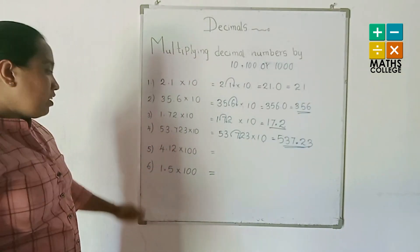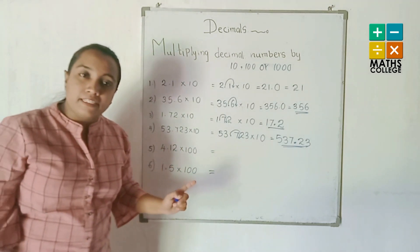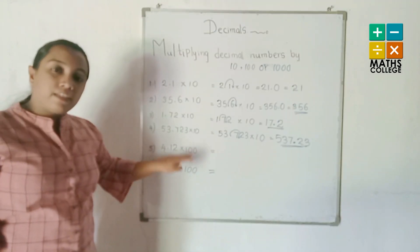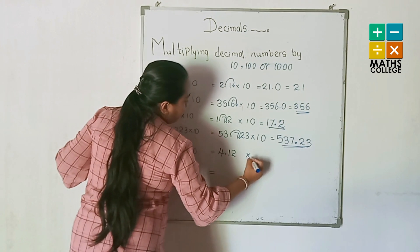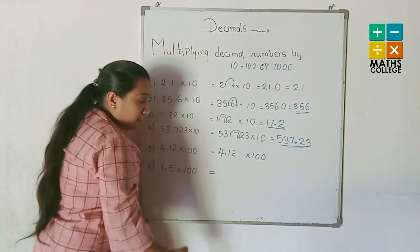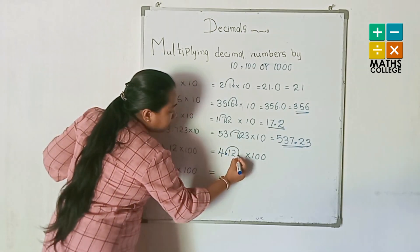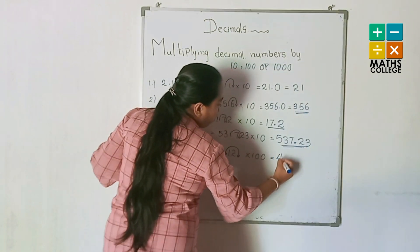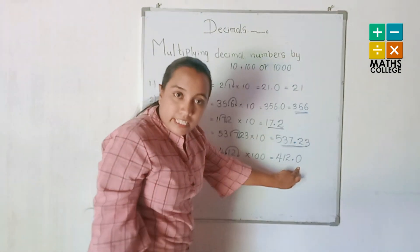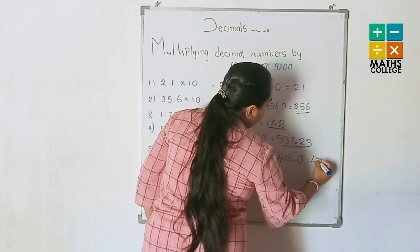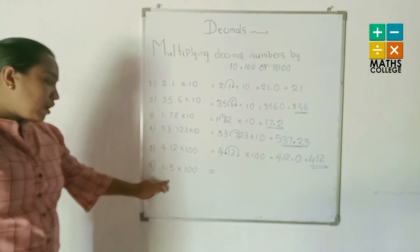Now how to multiply by 100. One hundred has two zeros. Example: 4.12 multiplied by 100. Two zeros means the decimal point jumps two places to the right — one, two. The answer is 412.0, which can be written as 412.